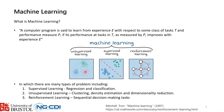Machine learning itself can be broken down into three areas, where the major difference is the level of supervision. Firstly, supervised learning. This generally considers a labeled dataset containing a feature vector X and a label Y. For example, if we want to do image classification, the feature vector could be an image and the label could be 'cattle dog'.